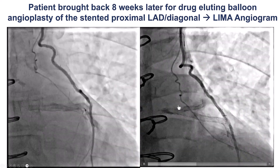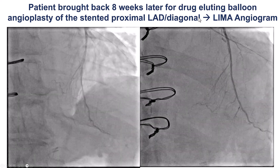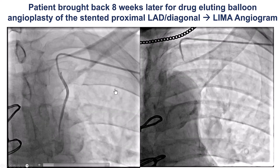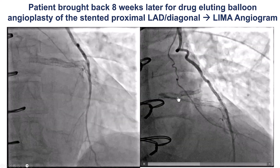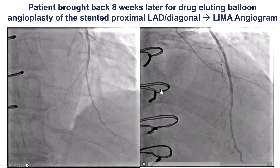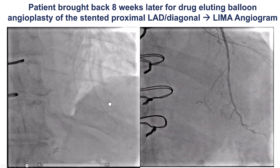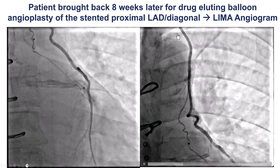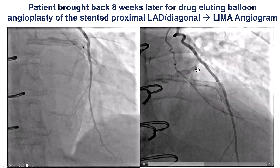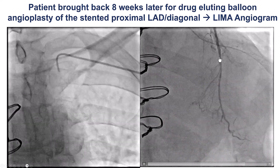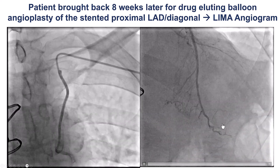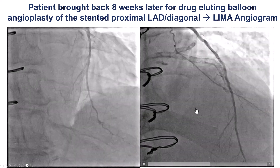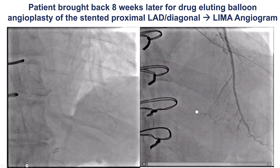The patient returned for a planned PTCA with a drug-coated balloon of the diagonal in-stent restenosis, and we took a picture of the LIMA at the same time. The LIMA looked great — there was nice TIMI flow into the LAD, which had significantly grown in size from the original attempt.